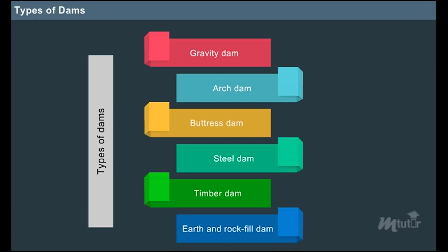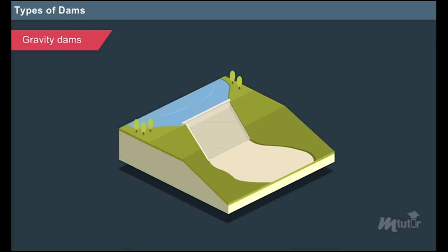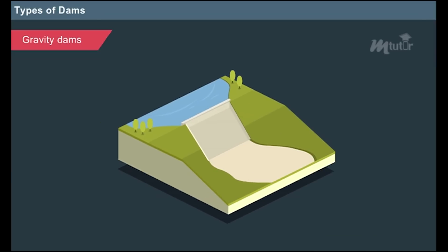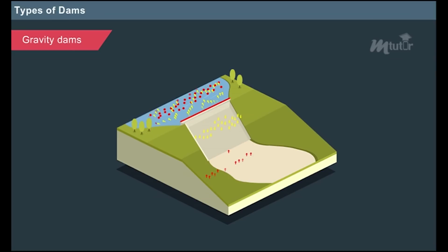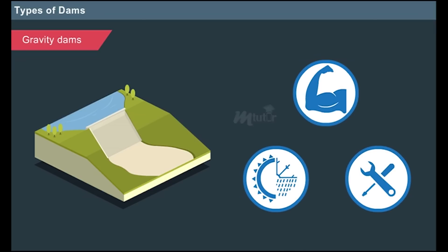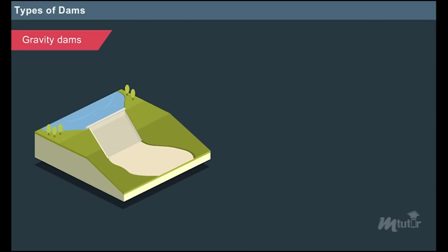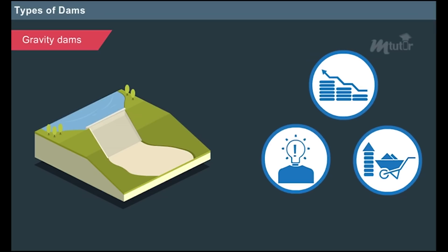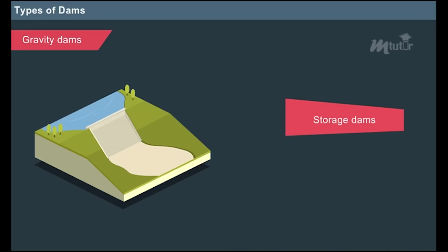Gravity dams are made up of concrete or masonry wherein the external forces like water pressure and uplift pressure are resisted by the weight of the dam. The main advantage of gravity dams is that they are relatively stronger, durable and need less maintenance than earthen dams. However, the initial cost of construction is very high and it requires skilled labours and expensive materials. Gravity dams come under the category of storage dams, non-overflow dams and rigid dams.